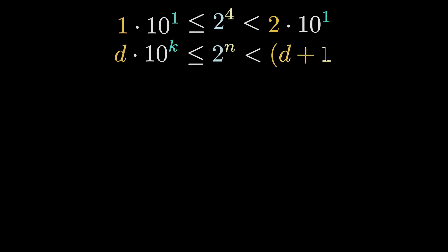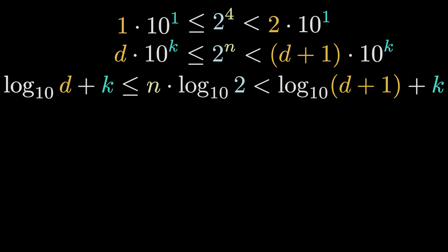Let's write the same sentence for a generic power of 2. It reads as follows. Where the 4 is replaced by n, the leading digit by a small d, and the letter k encodes the order of magnitude. Now it's time for the magic moment of this presentation. We feed these inequalities through the logarithm of base 10. This logarithm turns products into sums and powers into products.